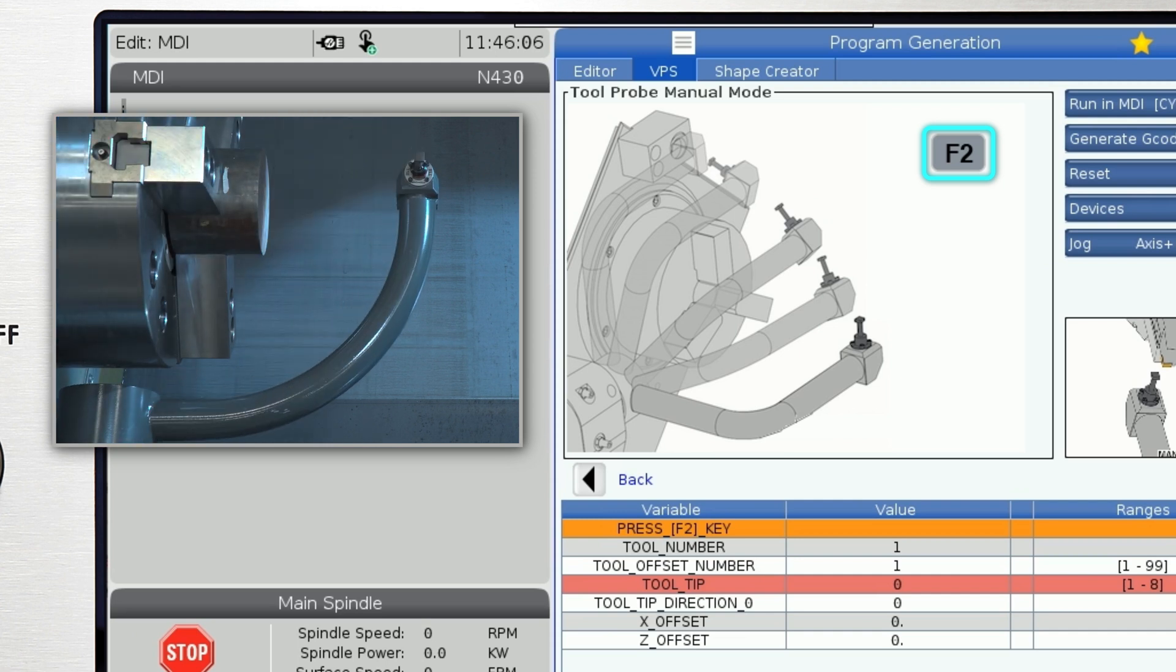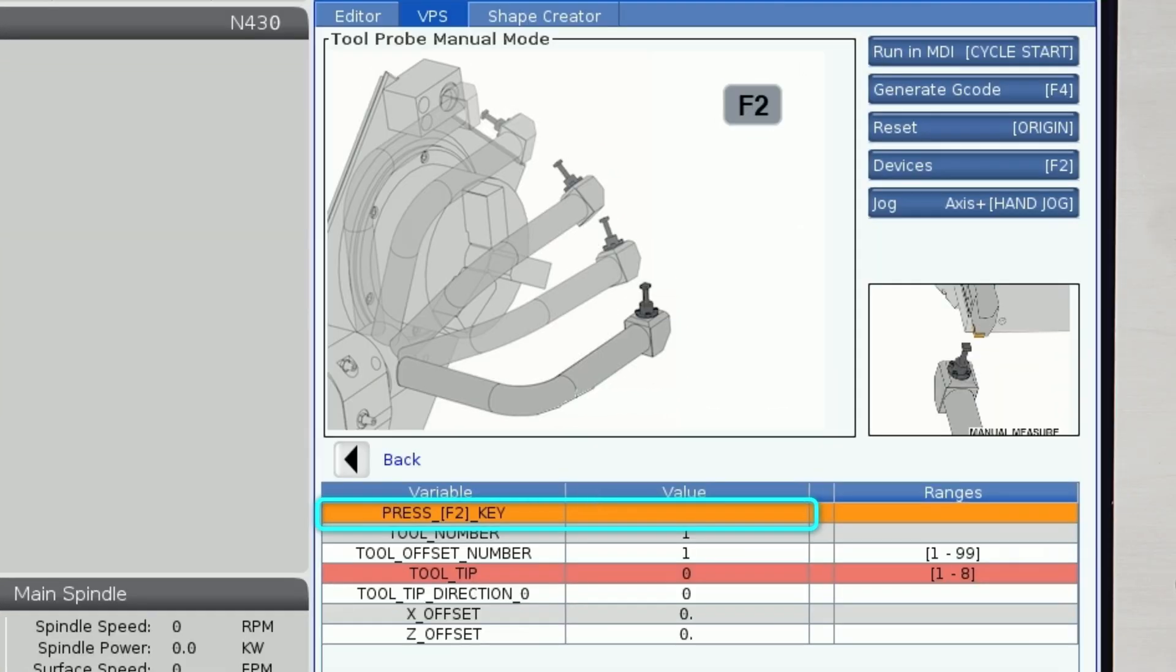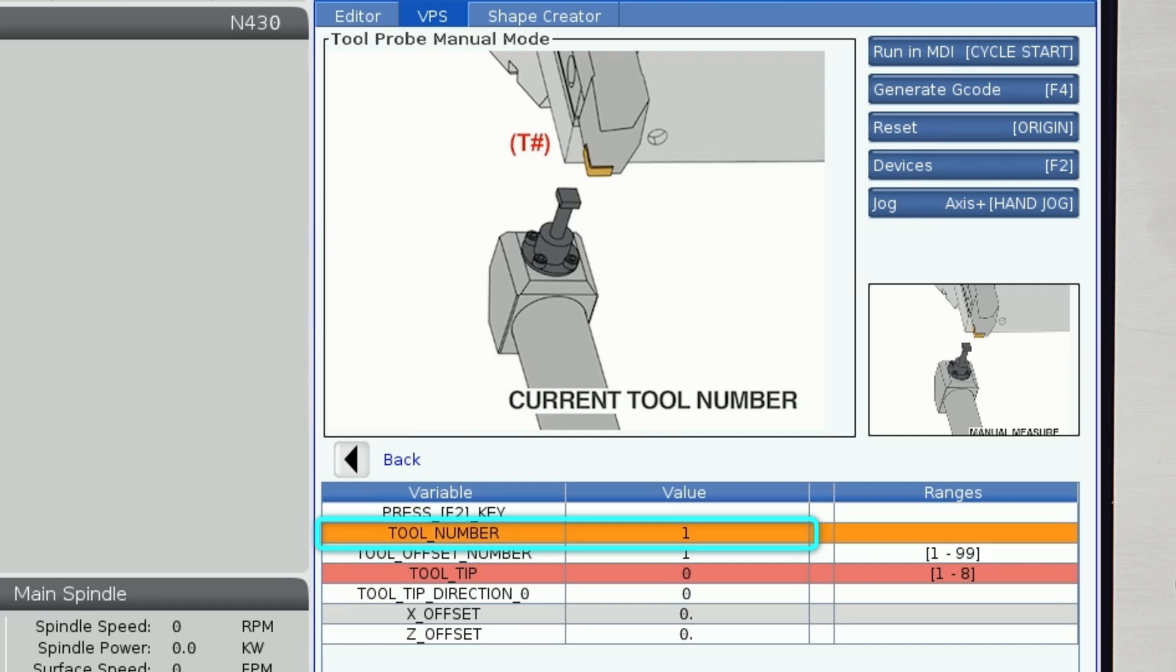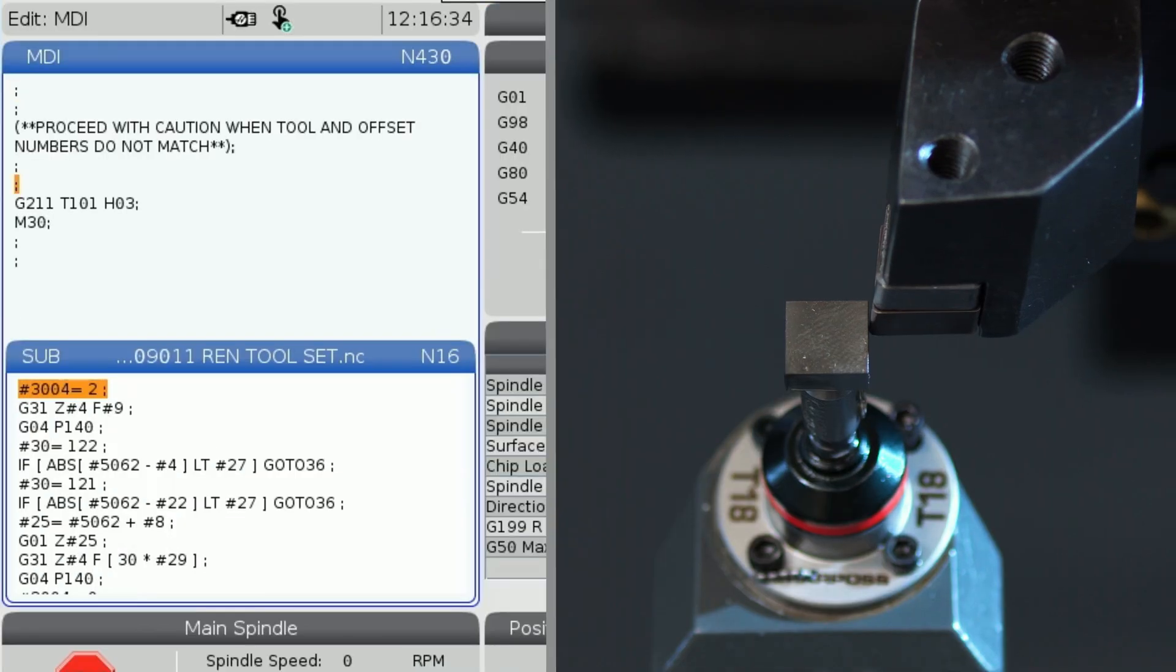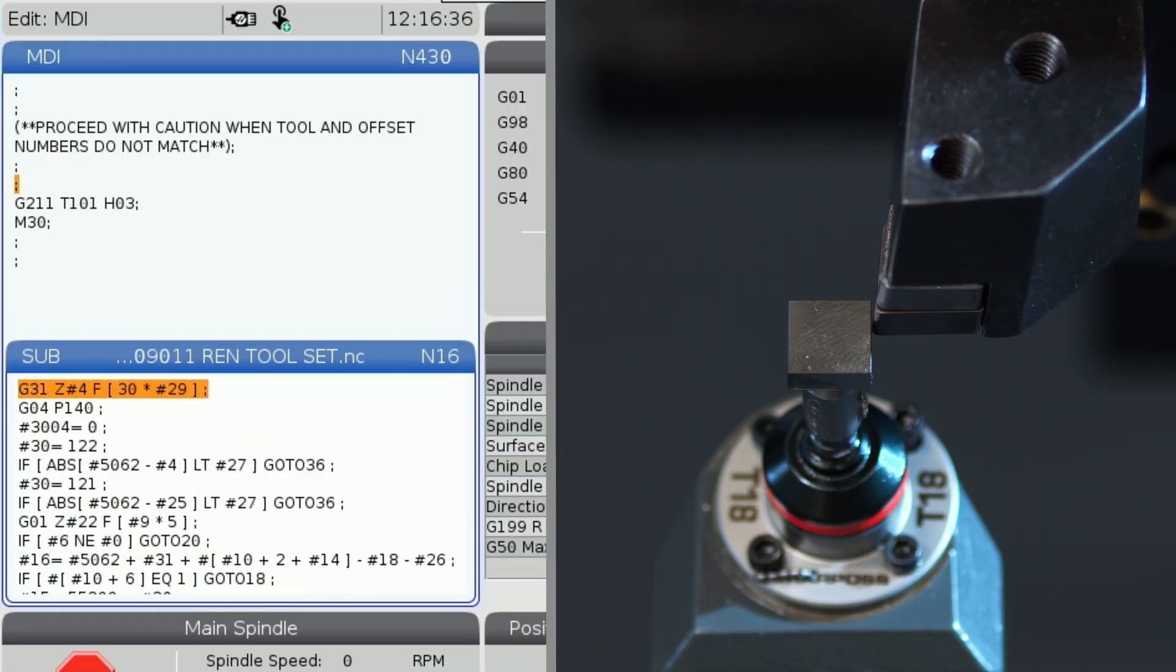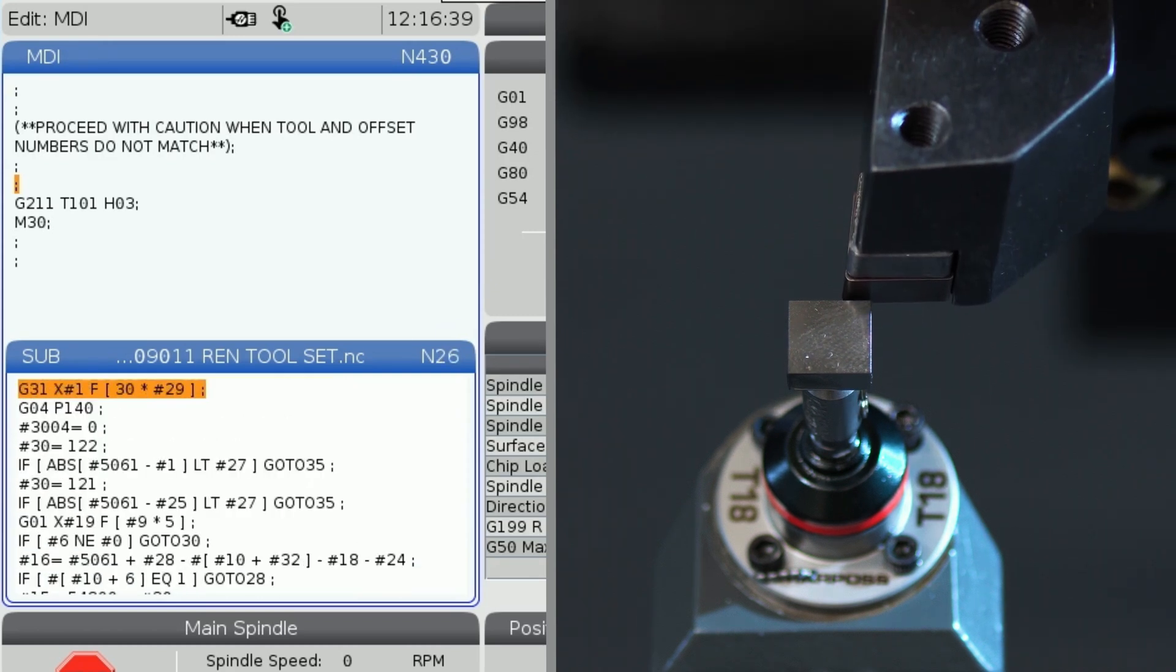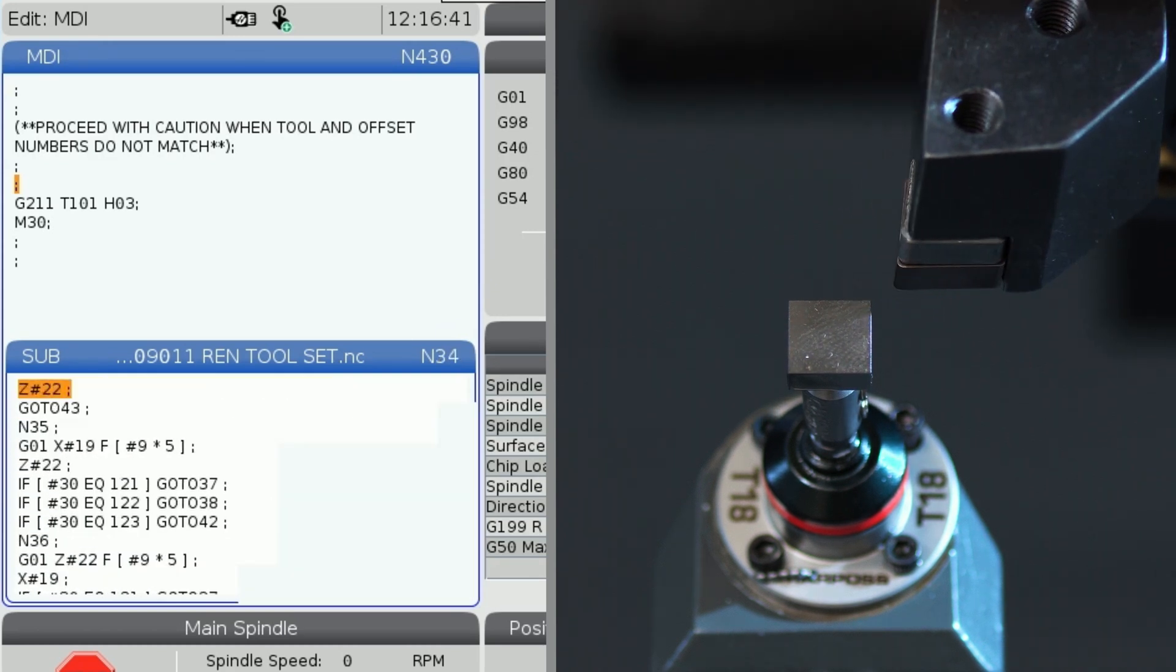Then, enter the specifics of the active tool you want to measure. Tool number, offset number, and insert direction. Then, we jog the tool up to the probe tip and press cycle start. The probe touches off in both the Z and X direction and the offsets update.